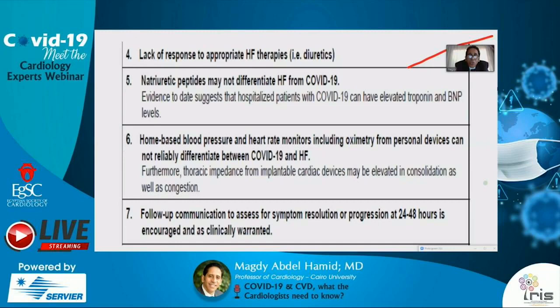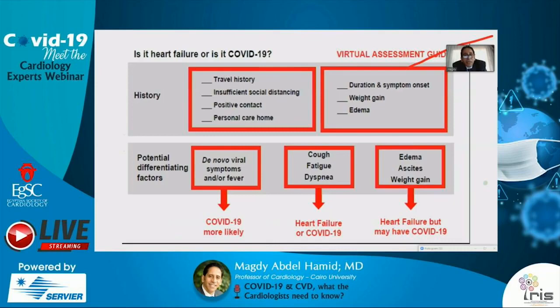A diagnostic diagram: de novo viral symptoms and/or fever makes COVID-19 more likely. If the patient presents mainly with dyspnea, cough, and fatigue, both heart failure and COVID-19 are possible. However, in the presence of more edema, ascites, and weight gain only, this favors the diagnosis of heart failure after excluding COVID-19.